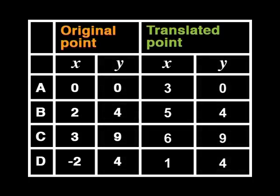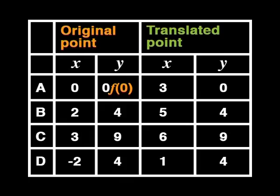How are we going to describe this change using function notation? That's a good question. Let's start by writing down the Y values of the original function using function notation, like we did in the previous lesson. I could do that. Zero becomes F of zero. Four becomes F of two. Nine becomes F of three. And four becomes F of minus two.